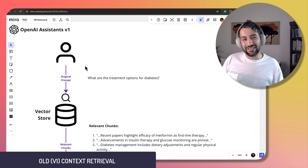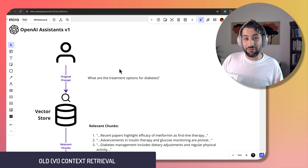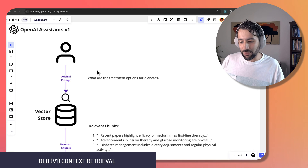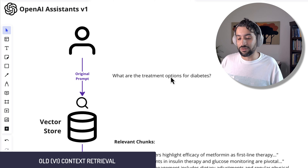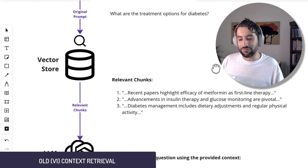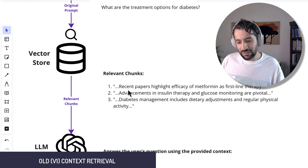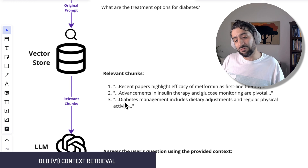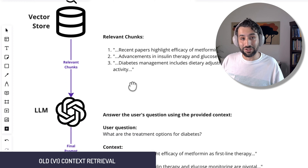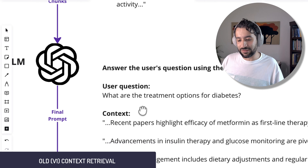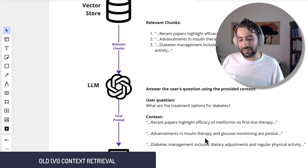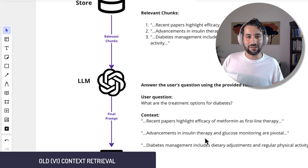In V1, for a health research bot with uploaded research papers, if the user asked 'What are the treatment options for diabetes?', it would retrieve the relevant chunks from the vector store — say three chunks (the top K parameter). It would then pass those to the underlying LLM like ChatGPT with a prompt like 'Answer the user's question using the provided context,' along with metadata such as which file each chunk came from, enabling citations.